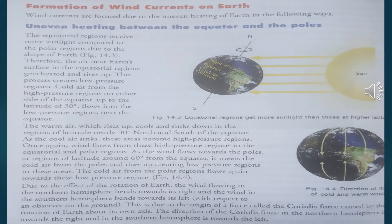Hello students of class 7, let's continue our chapter on wind and storm. Till now we have discussed how a low pressure area is created, and because of the pressure difference between low and high pressure areas, air moves from higher pressure to lower pressure — this is how wind flows. Today we are going to discuss the formation of wind currents on Earth.